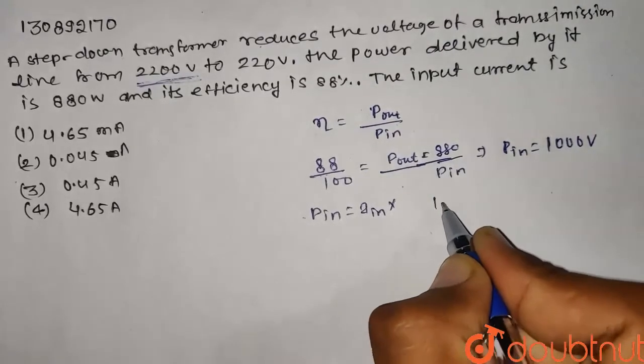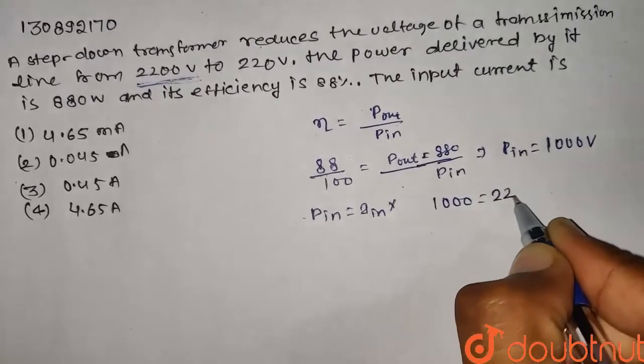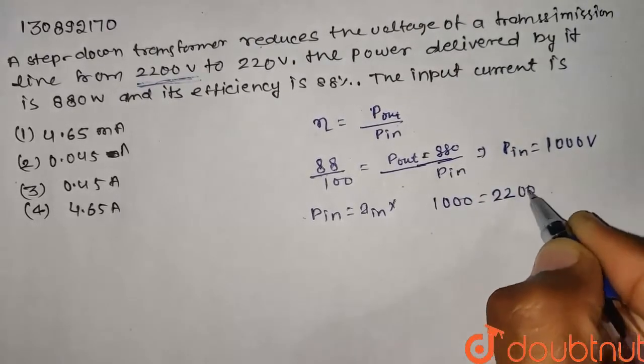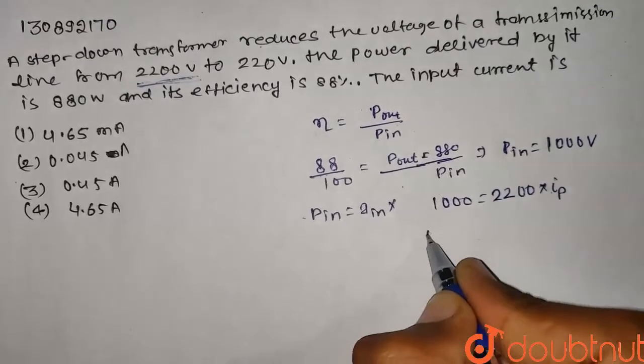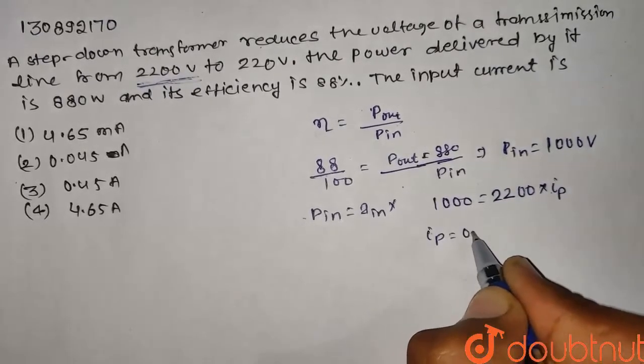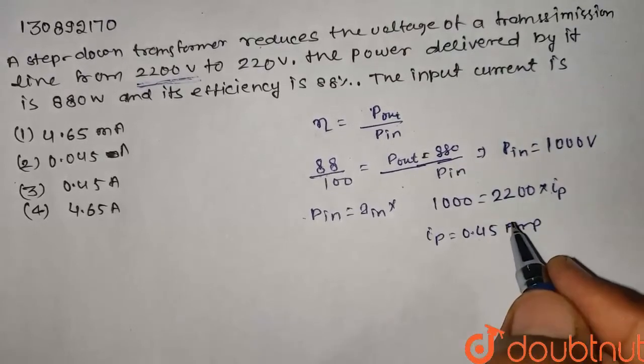So we can calculate: 1000 equals 2200 times I P. Therefore I P equals 0.45 ampere. This is the answer.